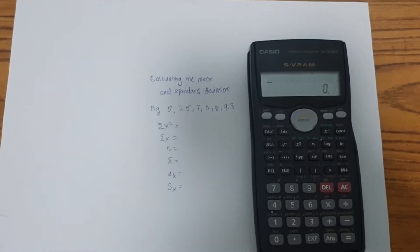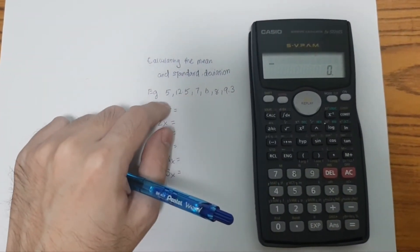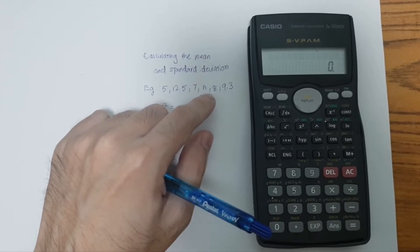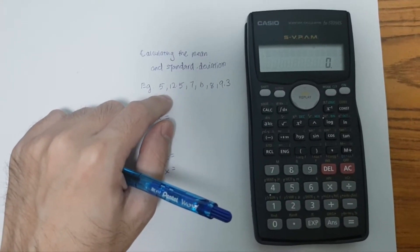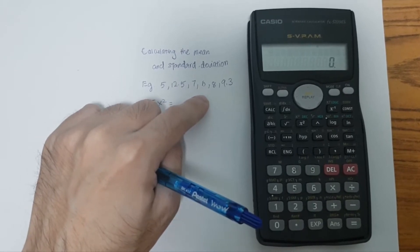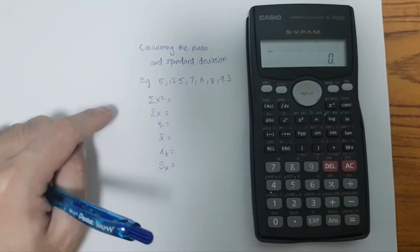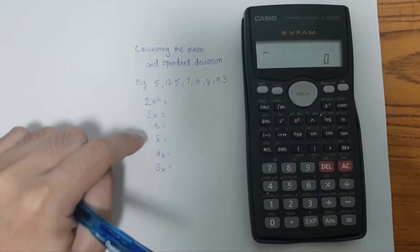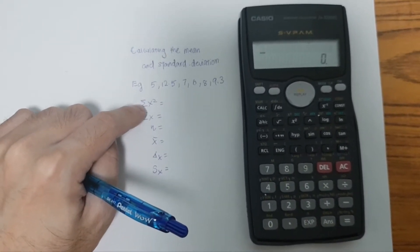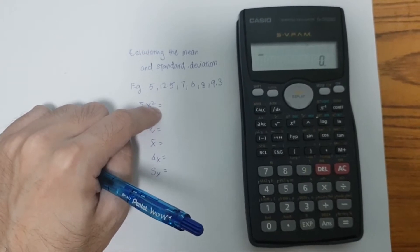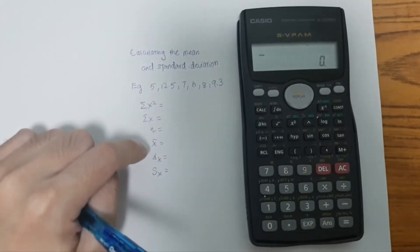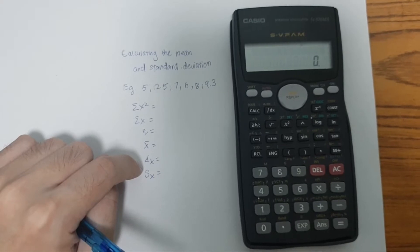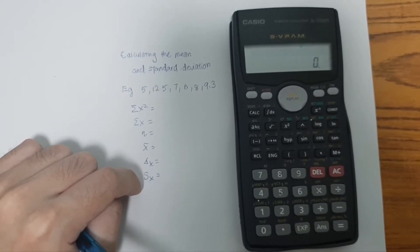So the first thing we do, we must have an example. Let's say we have an example with six values: 5, 12.5, 7, 6, 8, and 9.3. You are asked to calculate not just the standard deviation and the mean, but also the sum of squares of all these values, the sum of all these values, the sample size, the sample mean, the population standard deviation, and the sample standard deviation.